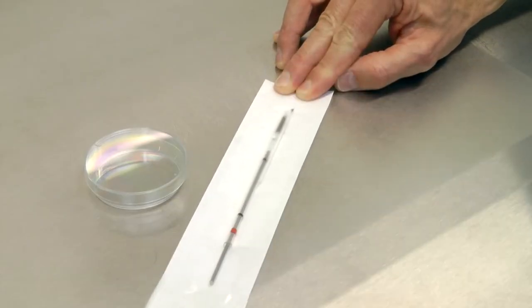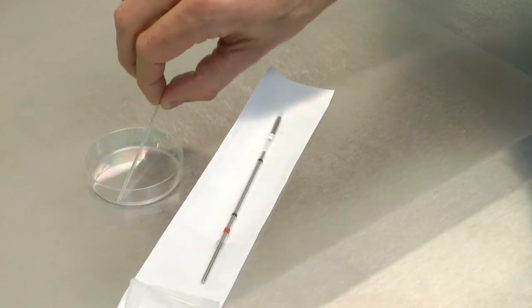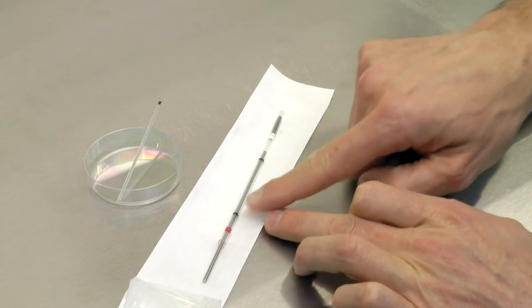When you open the pouch, place the RapidEye inside a sterile dish and label the straw in between the two black lines.